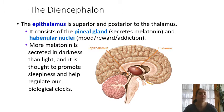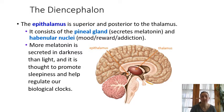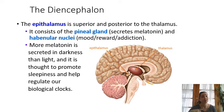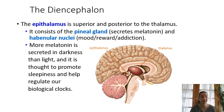The epithalamus is the more posterior part of the diencephalon and includes the pineal gland and structures called the habenular nuclei. The habenular nuclei mostly control things like reward and addiction. The pineal gland is really important for maintaining your daily cycles — your circadian rhythm. It secretes the hormone melatonin, which causes you to get sleepy and go to sleep at night, acting as your biological clock.